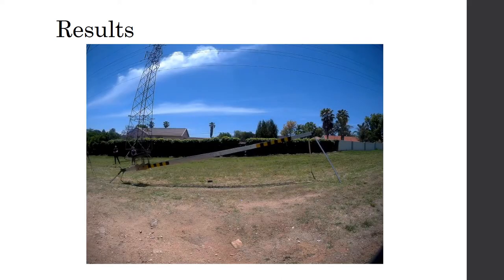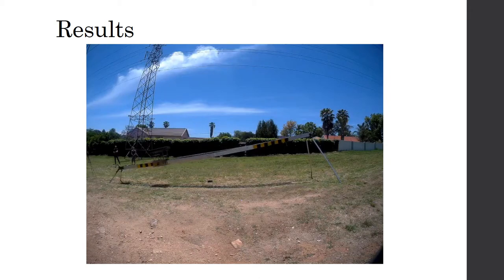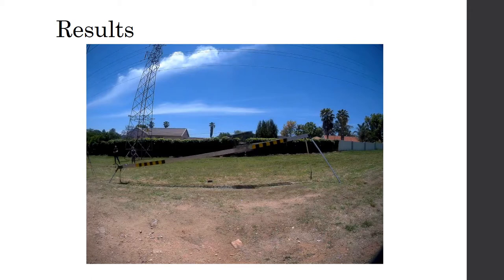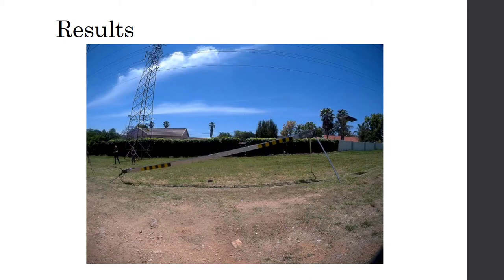This slow motion video shows the launch of the test slug using 3 bungees. Notice how the rear legs bend anywhere between 15 and 20 degrees, which is why testing was called off. The slug however is launched well. Also notice how there is a lot of flexing of the rail itself.